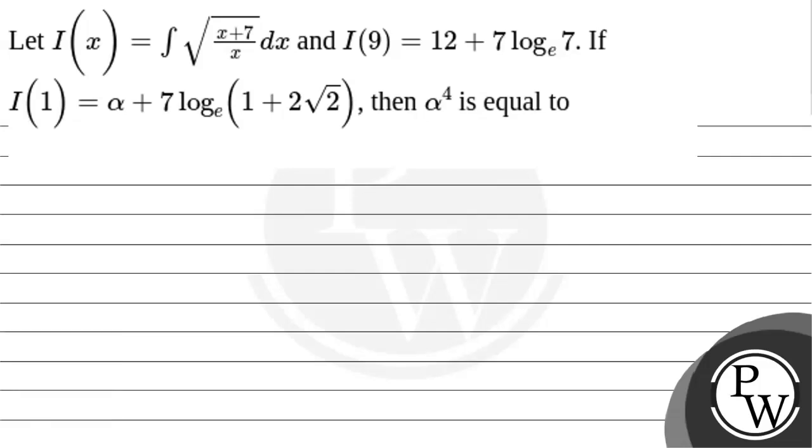Let us read this question. The question says: Let I(x) equal the integral of √(x+7)/x dx, and I(9) equals 12 plus 7 ln 7. If I(1) equals α plus 7 ln(1 + 2√2), then α to the power 4 is equal to...